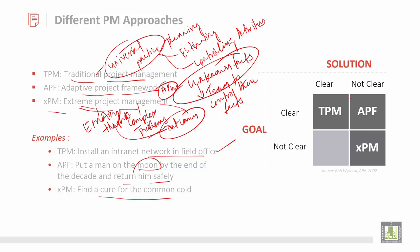This is shown in a matrix form. You can see TPM, APF, and XEM. In the matrix, some factors are clear and some are not clear — forming a combination where certain approaches align with clear or unclear parameters.